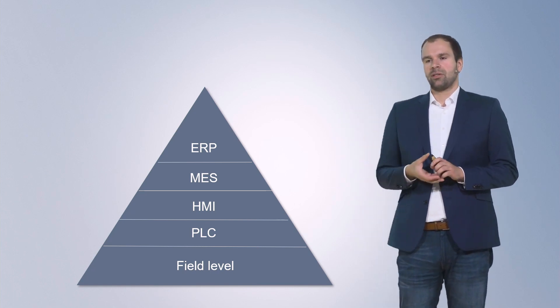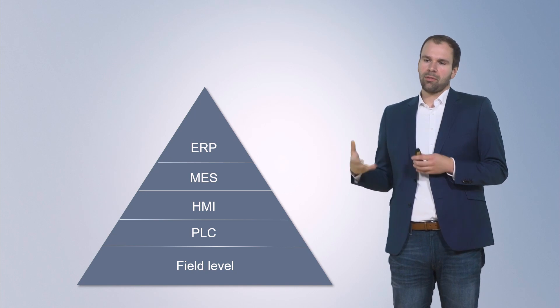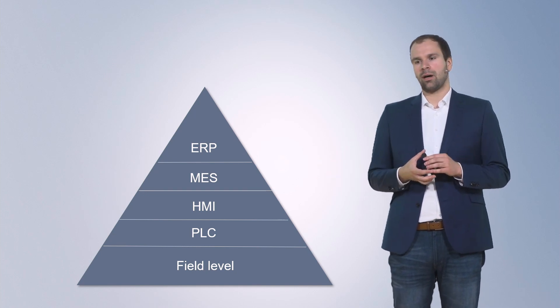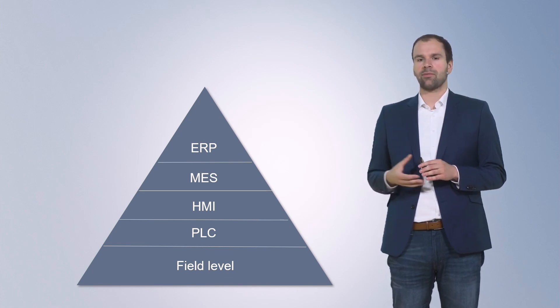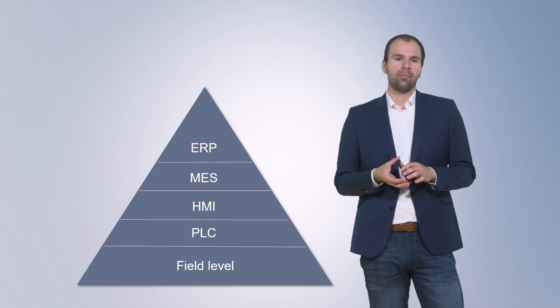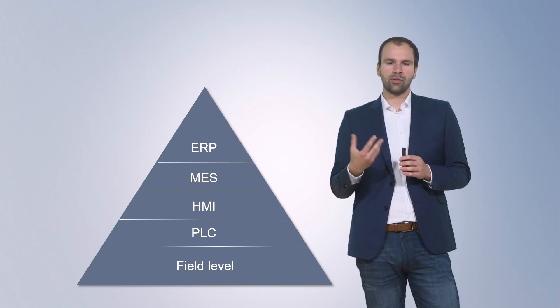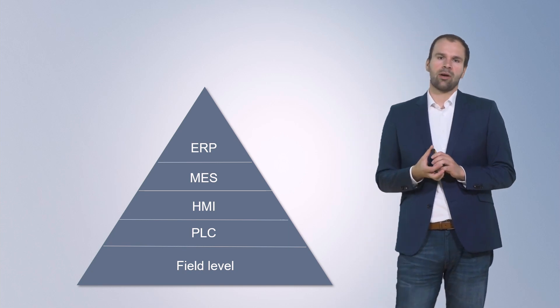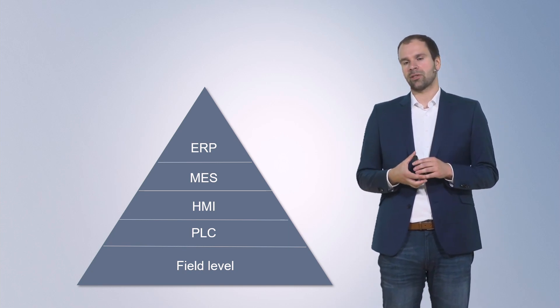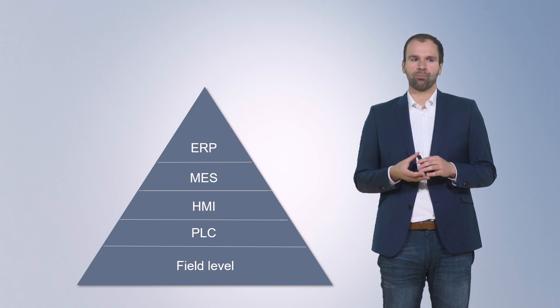A typical automation architecture looks like this — the automation pyramid with its different layers. The typical NOA use case is to retrieve all the information and data from the field level, directly from the process, and make this information available to higher-level systems. Currently, not all information is read from the field, so a lot of data is already lost on this first step. A key requirement for NOA is that it must be compatible with both brownfield and greenfield applications, and must not impact existing automation systems.